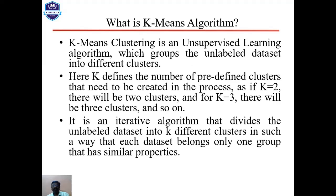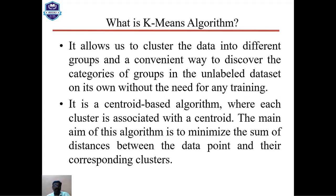K-Means clustering is an unsupervised learning algorithm which groups unlabeled datasets into different clusters. Here, K defines the number of predefined clusters to be created — if K equals two there will be two clusters, if K equals three there will be three clusters, and so on. It is an iterative algorithm that divides the unlabeled dataset into K clusters such that each data point belongs to only one group with similar properties, allowing us to discover categories without any training.